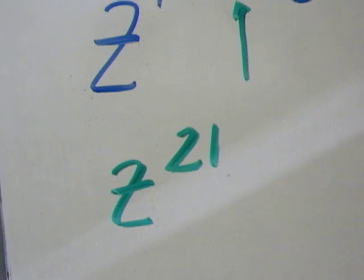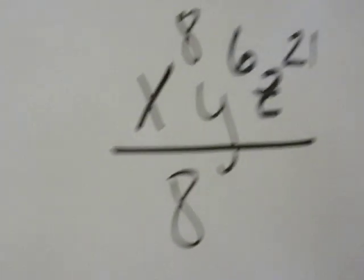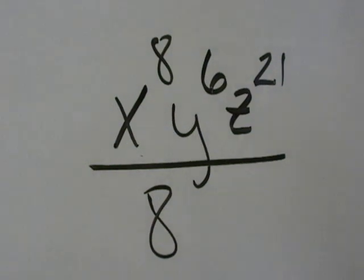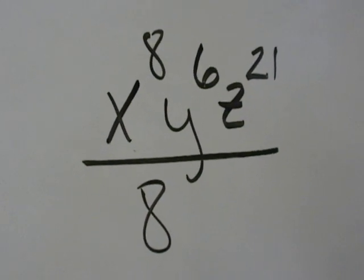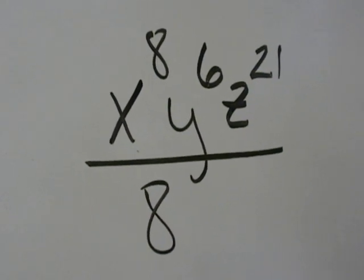So our final answer should look like this: x to the 8th, y to the 6th, z to the 21st, all over 8.